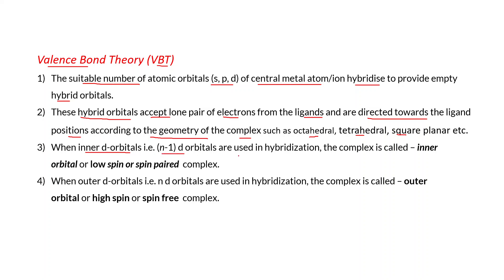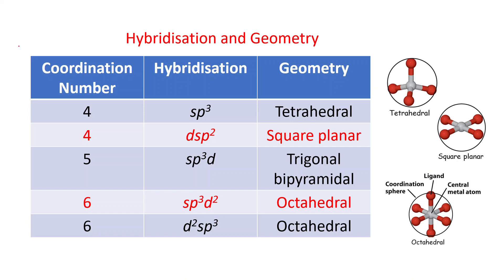When inner d orbitals, that is (n−1)d orbitals, are used in hybridization, the complex is called an inner orbital, low spin, or spin-paired complex. When outer d orbitals, that is nd orbitals, are used in hybridization, the complex is called an outer orbital, high spin, or spin-free complex. This table gives the relationship between coordination number, hybridization, and geometry.